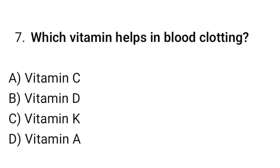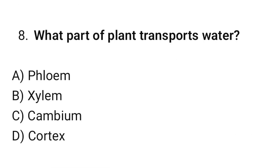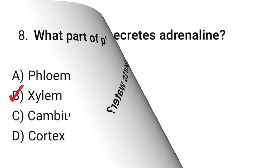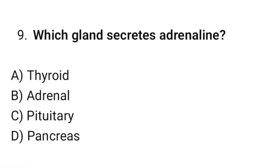Question number 7: Which vitamin helps in blood clotting? The correct option is C — Vitamin K. Question number 8: What part of a plant transports water? The correct option is B — Xylem. Question number 9: Which gland secretes adrenaline? The correct option is B — Adrenal.